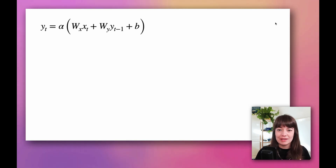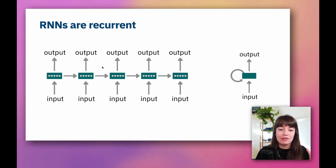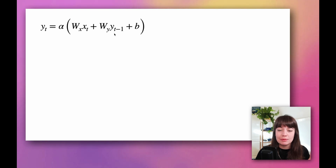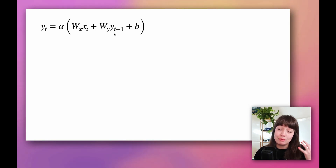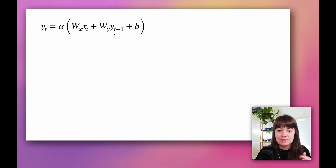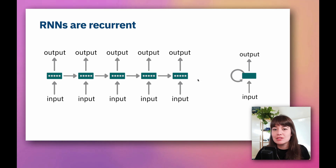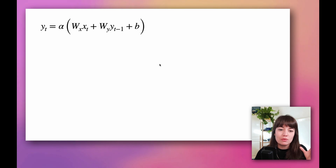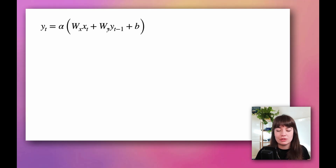One thing to understand here is that even though it looks like we have many steps, it's actually just one unit. So WX and WY — the weights of the output of the previous layer and the input of this time step — are the same, because they're actually the same unit. We're just showing them in an unrolled way because it's easier to understand. So there's only one set of weights for the input and one set of weights for the output.